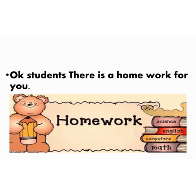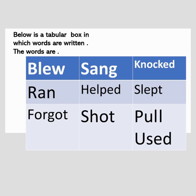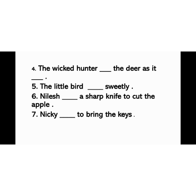Okay students, there is a homework for you. Homework: Below is a tabular box in which words are written. The words are: blew, forgot, helped, knocked, pulled, ran, sang, shot, slept, used. Choose verbs in the simple past tense from the box and fill in the blanks.